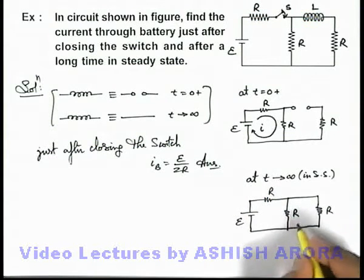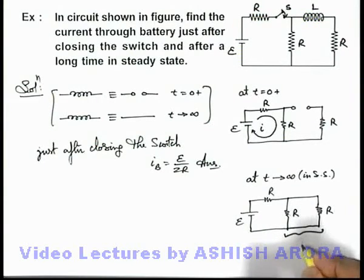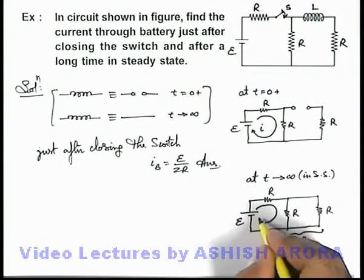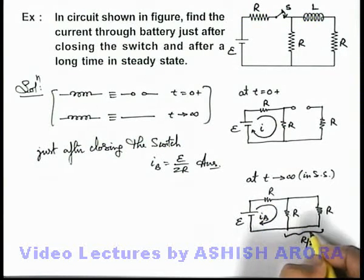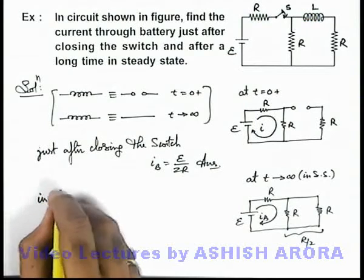Here we can see these 2 resistances can be considered in parallel, so the equivalent resistance will be r by 2 and this r by 2 is in series with r. So the current which is supplied by the battery i-b will be due to the series combination of r and r by 2, so here we can write in steady state.